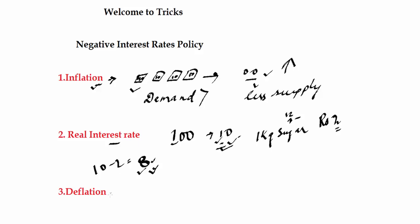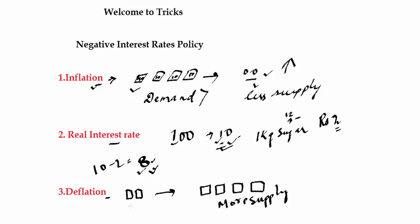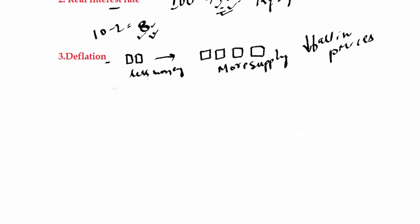Next is deflation — the opposite happens. Too little money chasing much more things means there is more supply and less demand. This leads to a fall in prices, and if this fall in prices continues for a longer period of time it is called deflation. During deflation, real interest rate increases — whereas in inflation the real interest rate decreases.